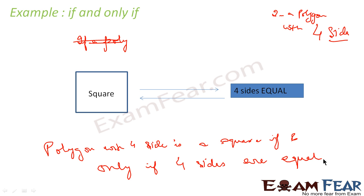So, a polygon with four sides is a square — that is possible if and only if four sides are equal. This means if in a polygon with four sides all the sides are equal, we can sure-shot say that it is a square. And if I'm talking about a square, then I can sure-shot say that all the four sides are equal.